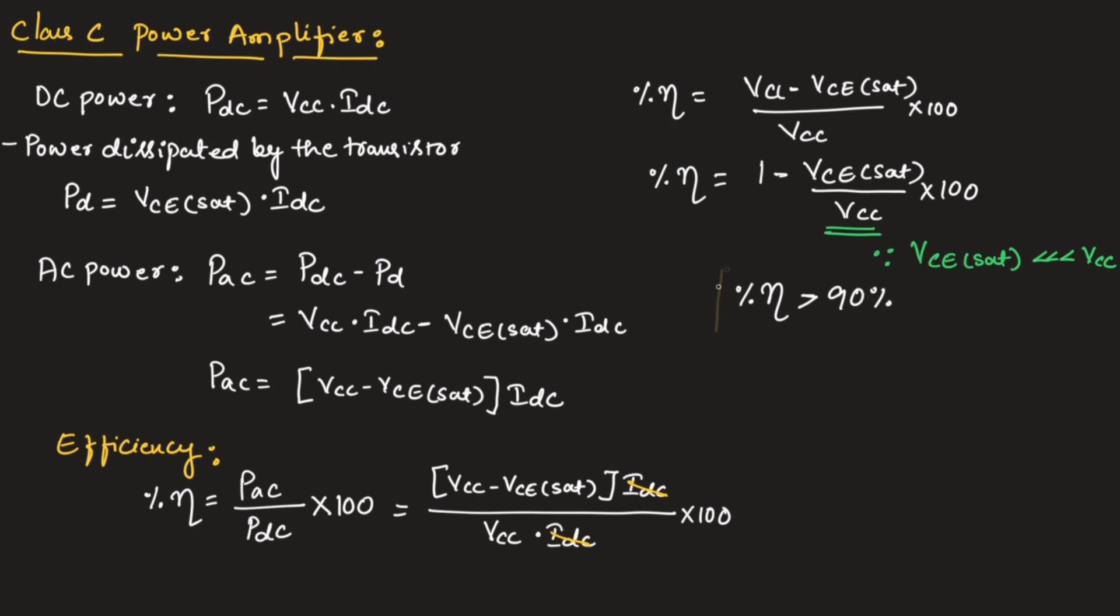The efficiency will be greater than 90 percent in case of class C power amplifier. This is about class C power amplifier. Hope you have understood the topic. Thank you.